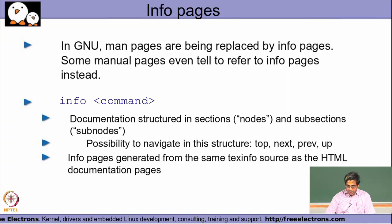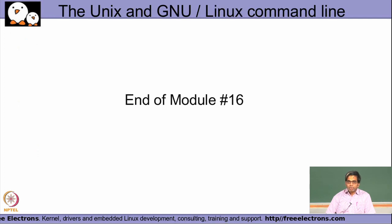The info command essentially gives you more details on how to use a command, its behavior, what other related commands exist, how they behave, and so on. Man and info are two useful commands that provide additional information on how a command can be used, including its options and the different arguments it may take.